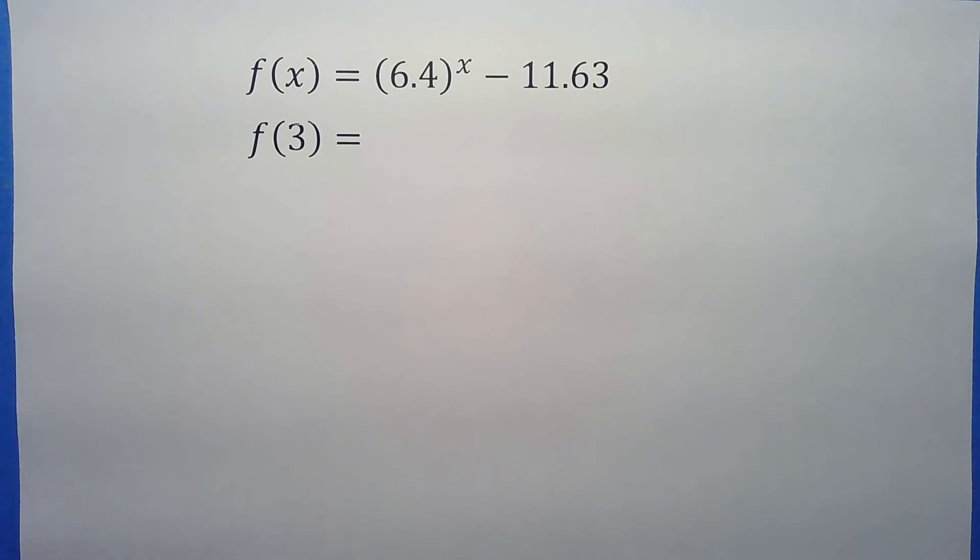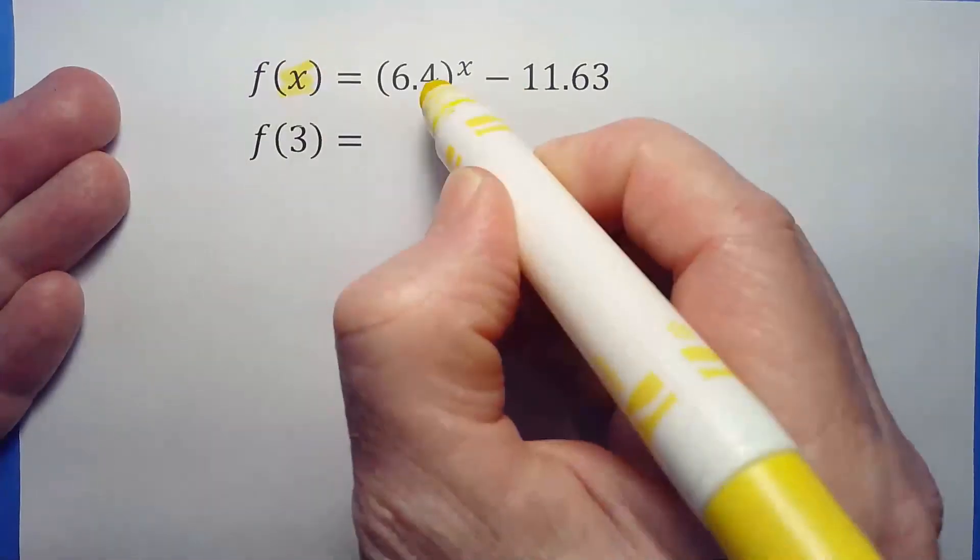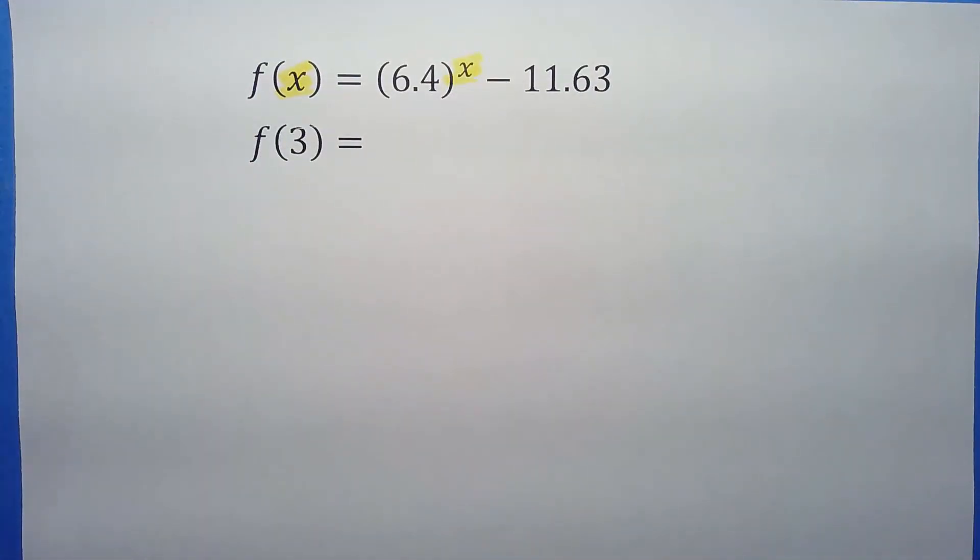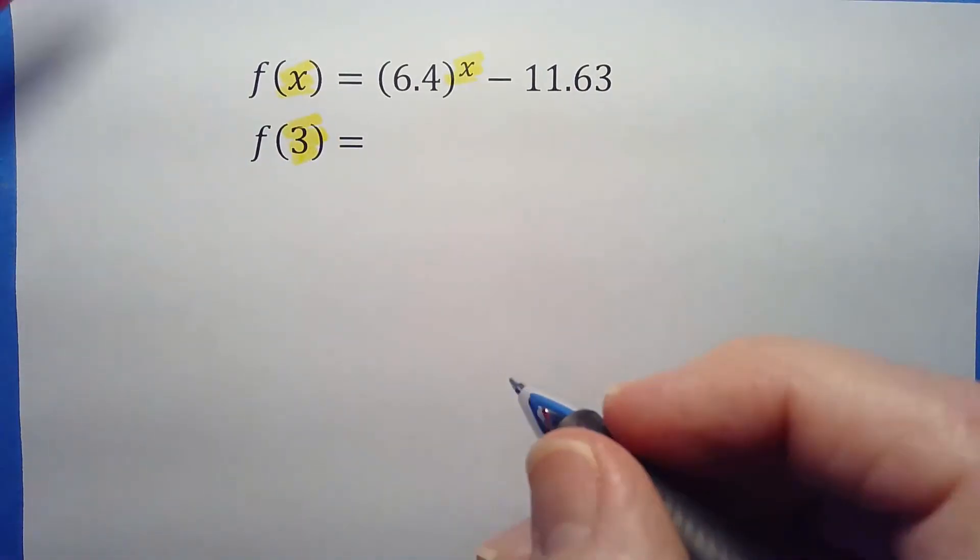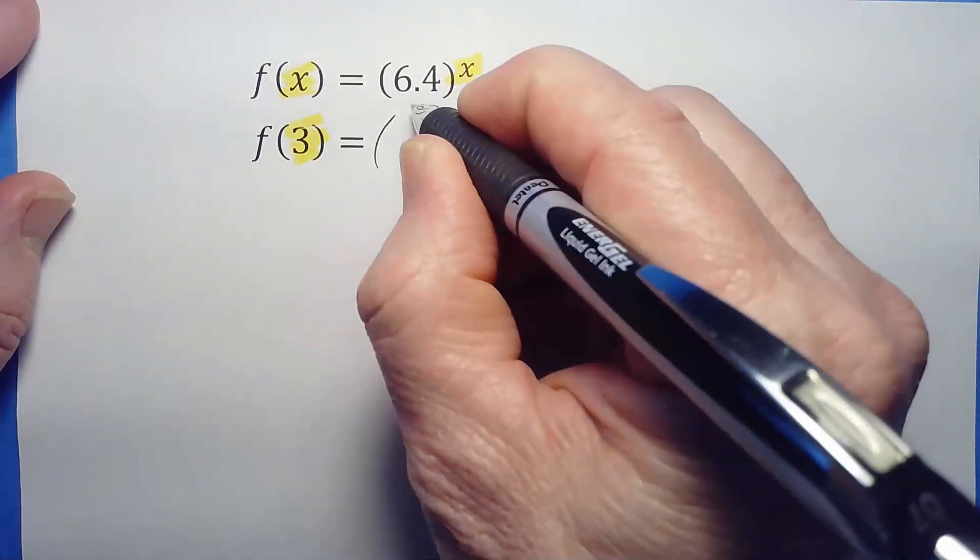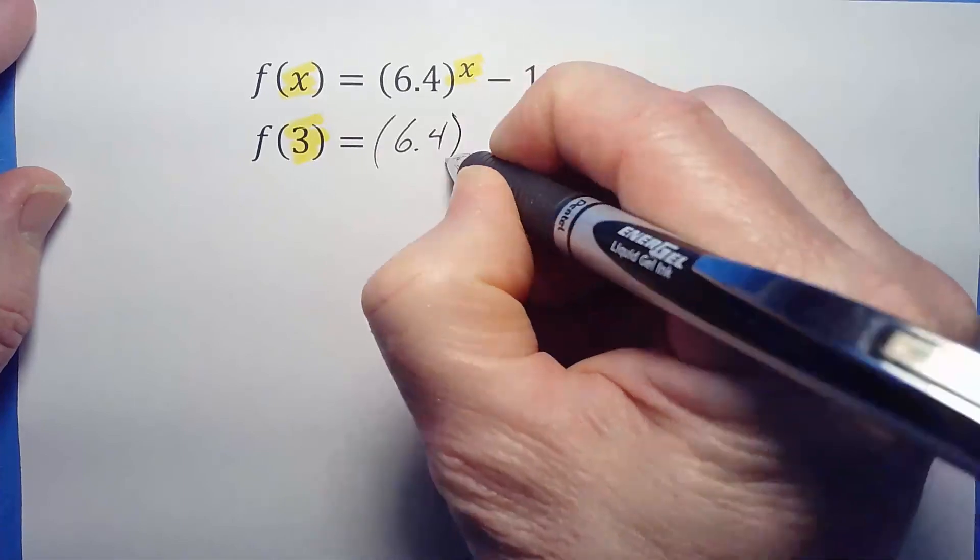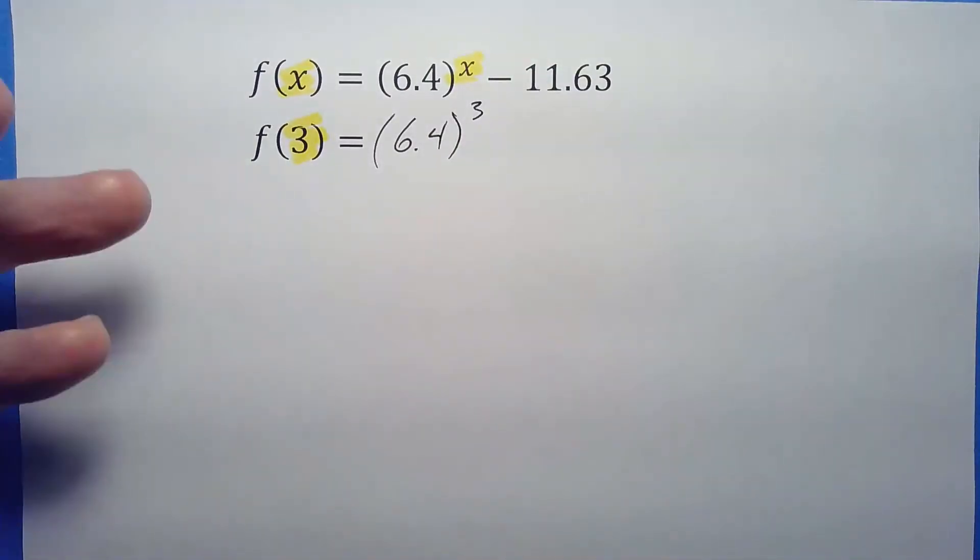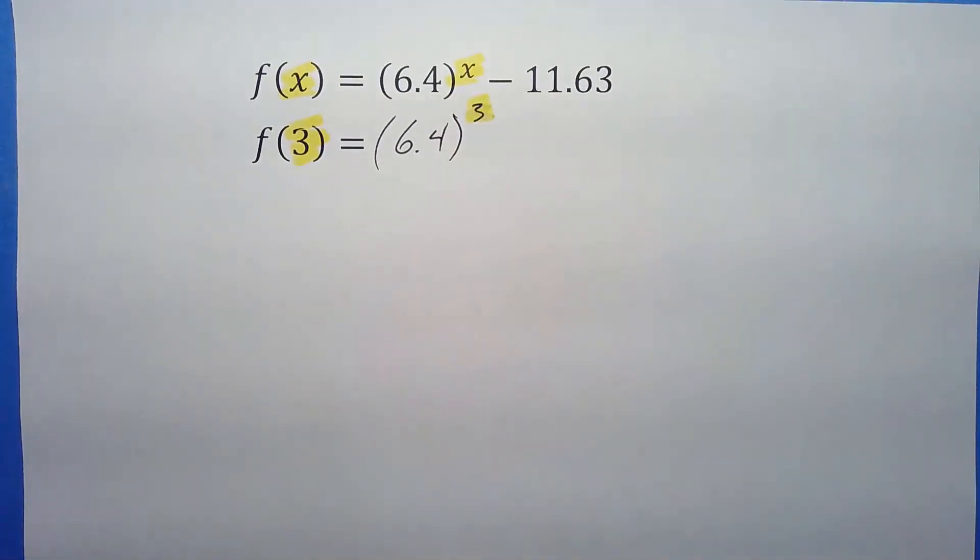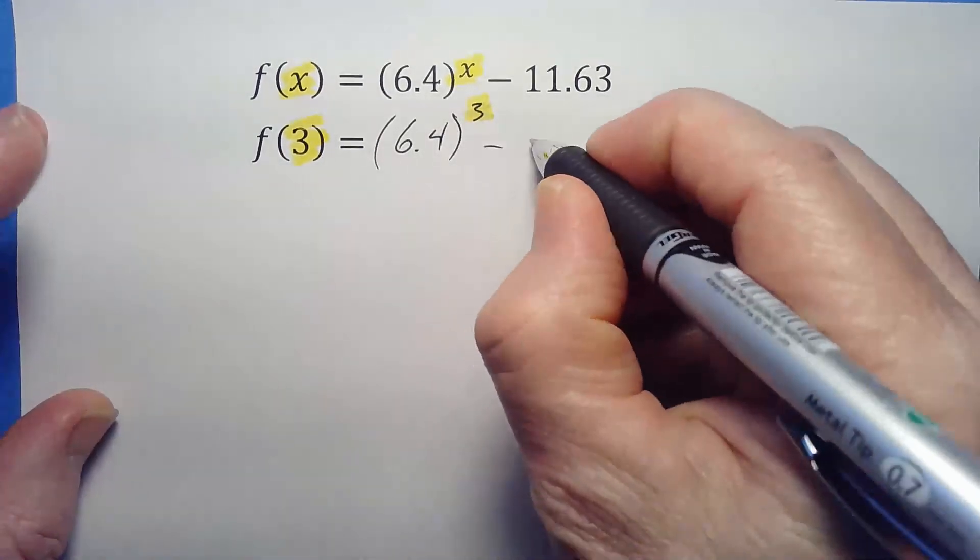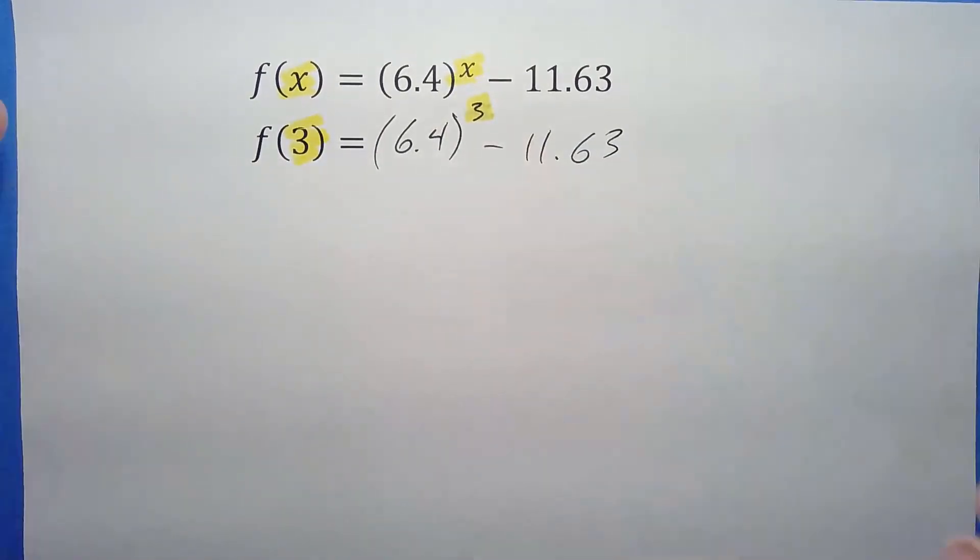Think about the x's. Where there's an x, I'm now going to put a 3. Decimals don't scare us because we're just careful. 6.4 to the third power minus 11.63.